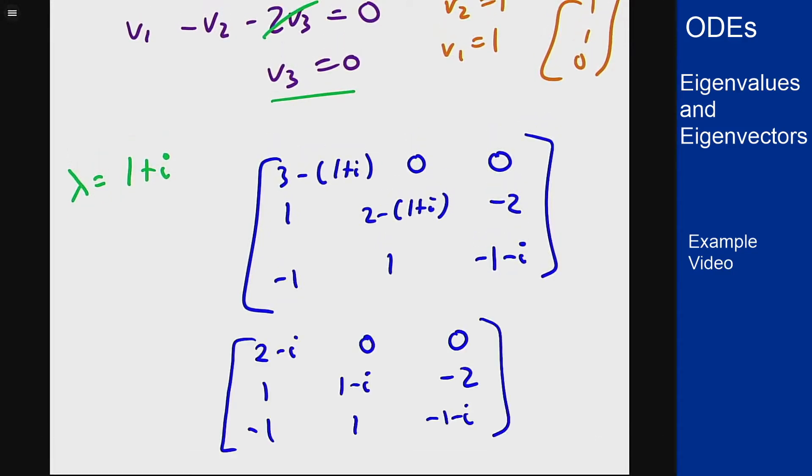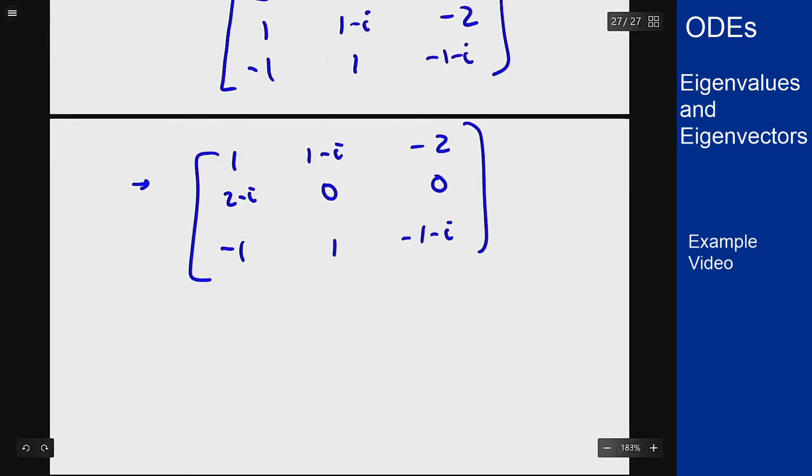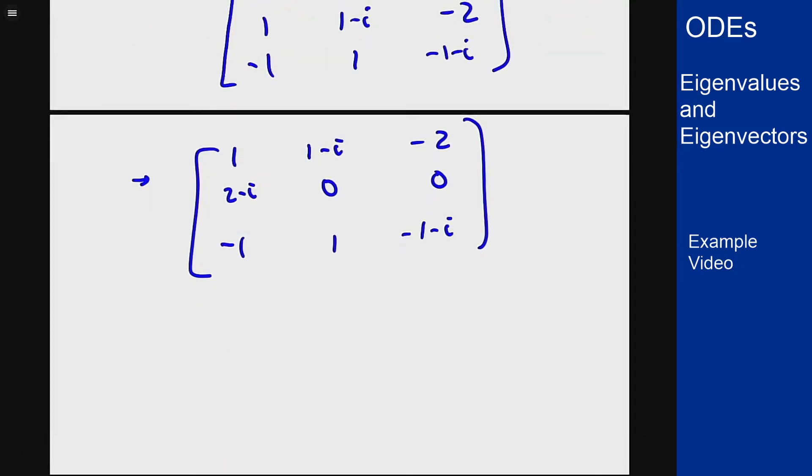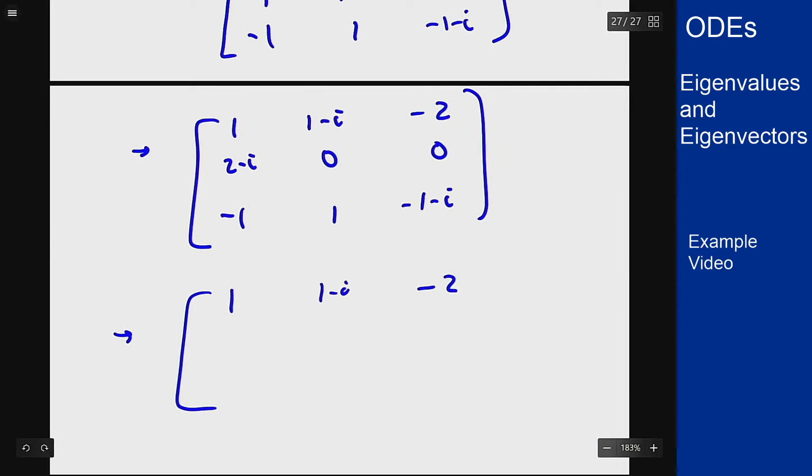Let's start by swapping rows 1 and 2 to put a 1 in the top corner to make this easier. Now we're going to cancel everything below that 1 in the top corner. The top row will stay the same. The bottom row we're going to add one copy of row 1 to it, so I'll get a 0 in this slot. I'll get 1 plus (1 minus i) which is 2 minus i, and I will get negative (1 plus i) plus negative 2, which is -3 minus i.